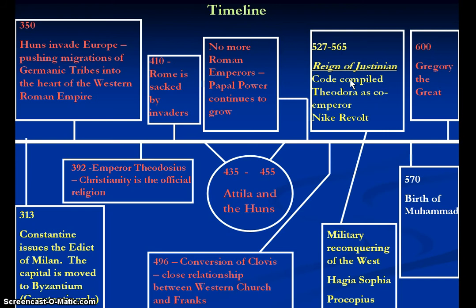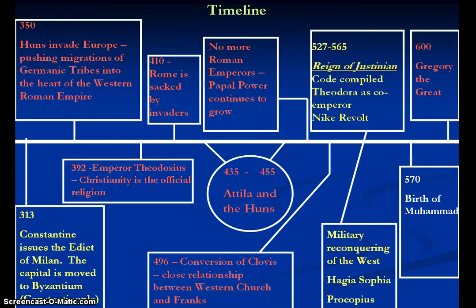Meanwhile, in the east, from 527 to 565, you get the reign of Justinian — this is the height of his power. You have the Nika Revolt, which ultimately he puts down. You get the building of the grand cathedral, the Hagia Sophia, in the capital of Constantinople. But ultimately, you also see the eventual decline of the Byzantines begin because of the economic situations that develop due to Justinian's reign.